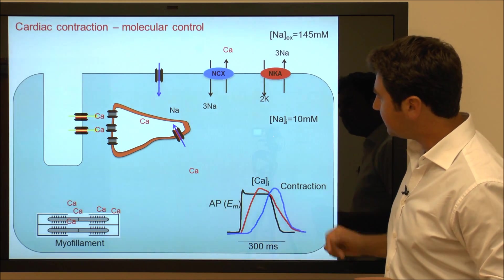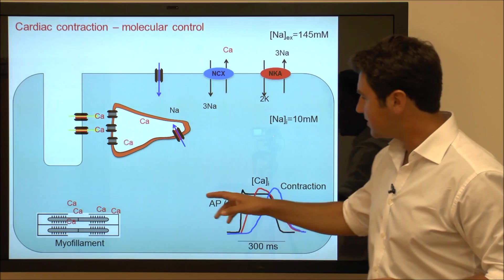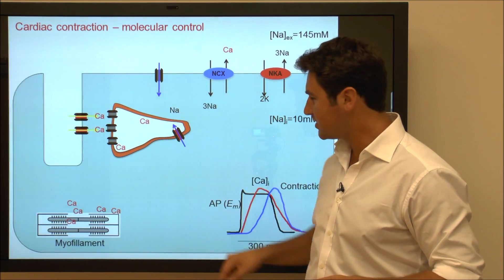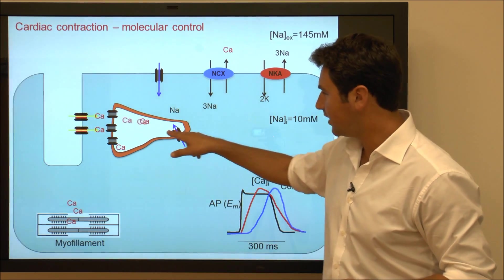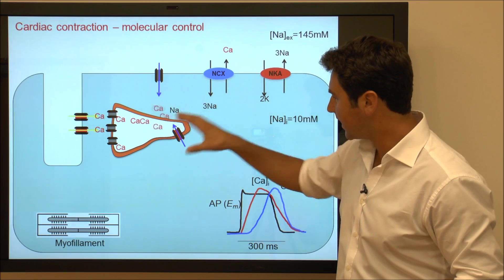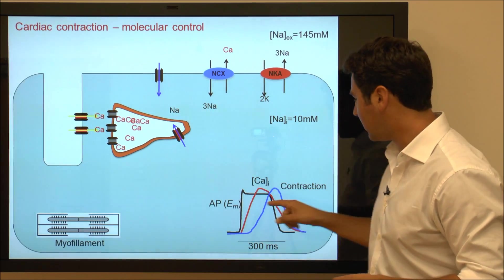For the relaxation to occur, calcium needs to go back into the SR and this happens via the SR-calcium ATPase. All the calcium that's left the SR goes back into the SR.